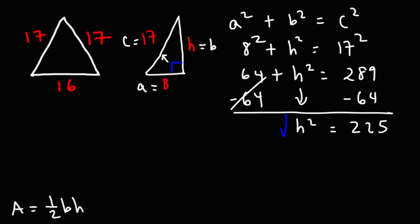So, 289 minus 64 is 225. Now, to get h by itself, we can take the square root of both sides. And the square root of 225 is 15. So, the height of the triangle is 15 units.